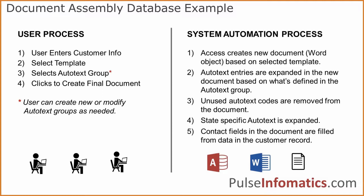On the system automation side, Access creates a new document using a Word object based on the selected template. The auto text entries are expanded into the document, and all unused auto text entries are removed from the document, since they're in the template waiting to be populated. There's some state-specific auto text expanded, and contact fields are filled in from the customer record.